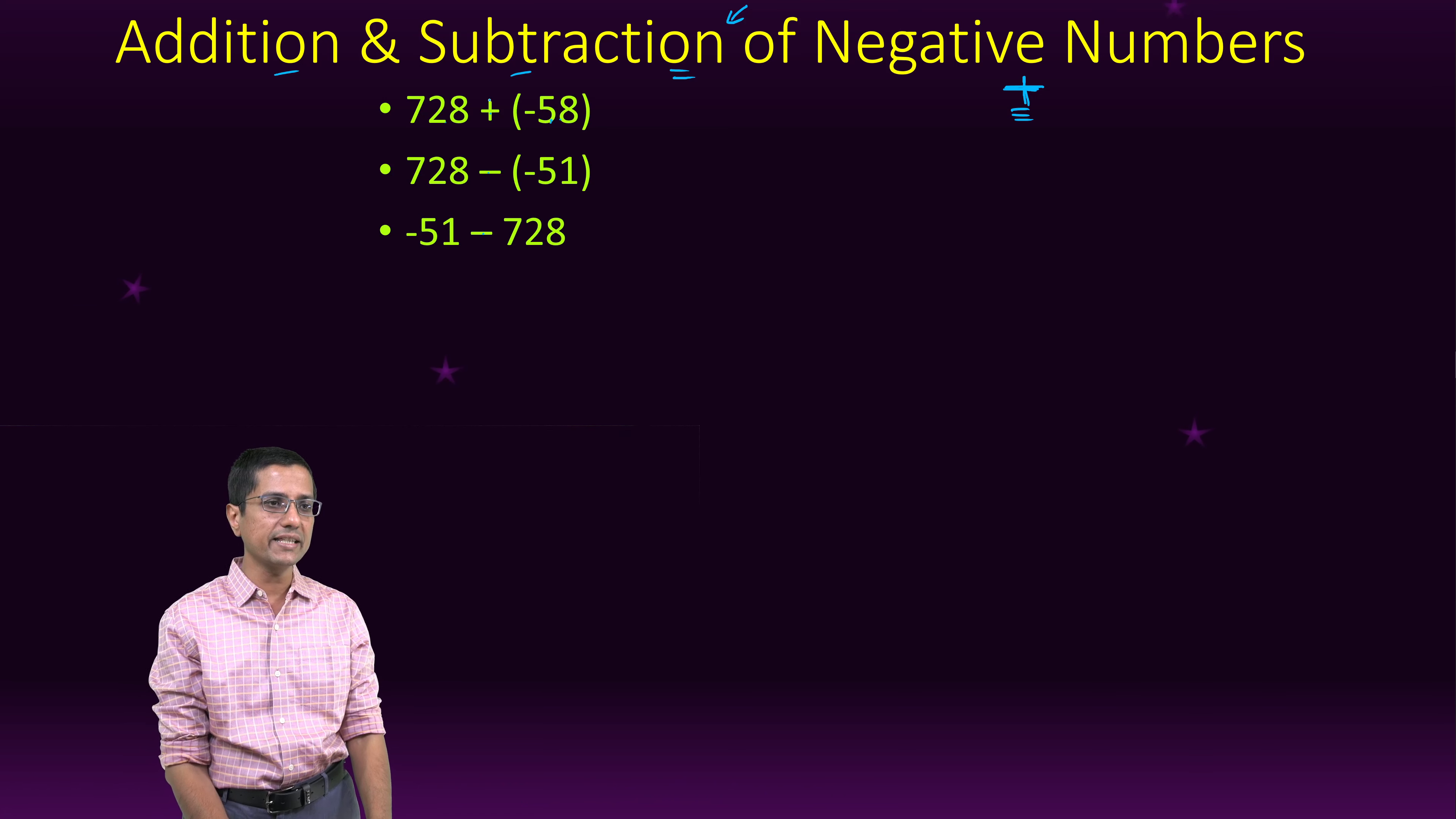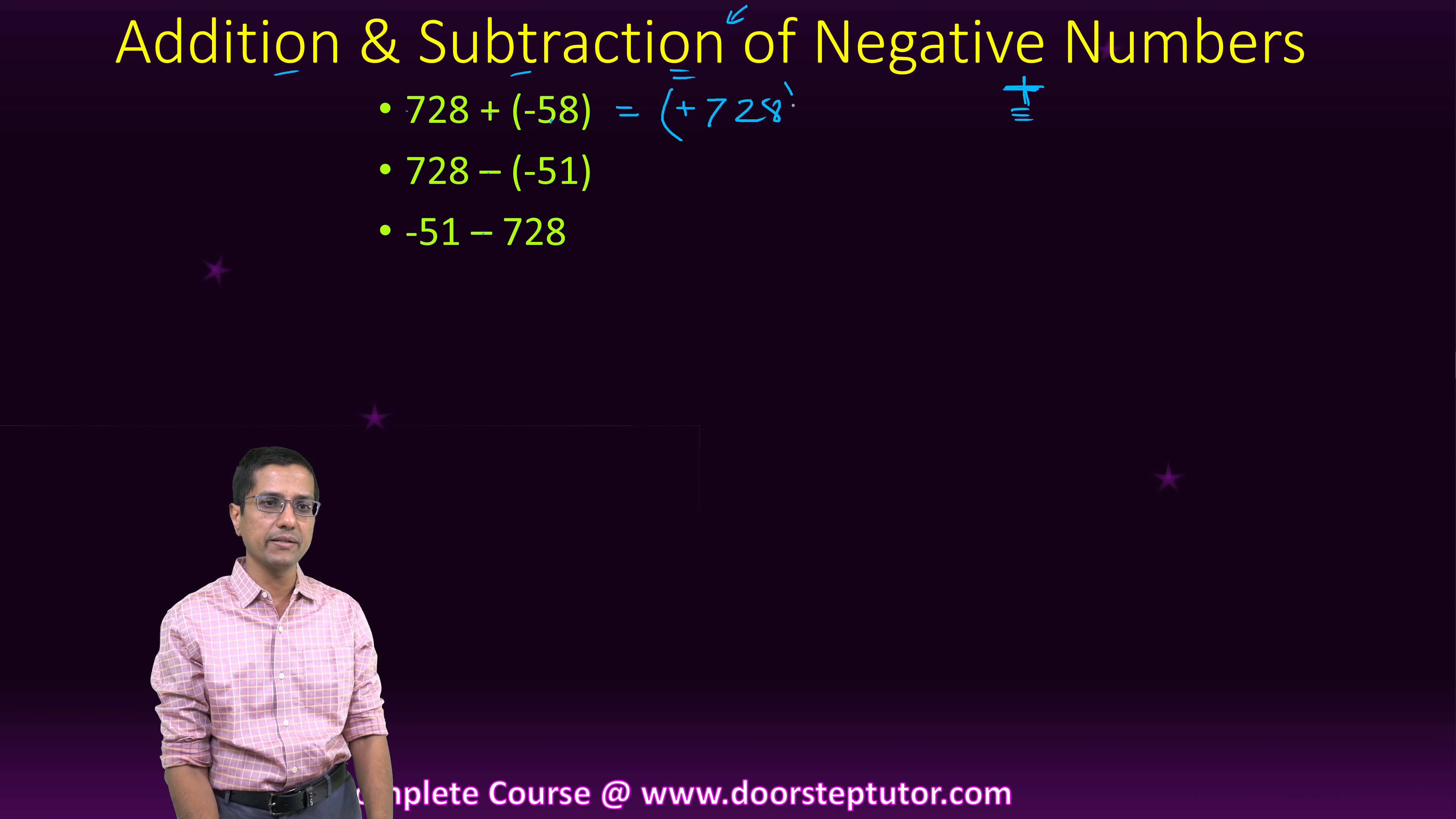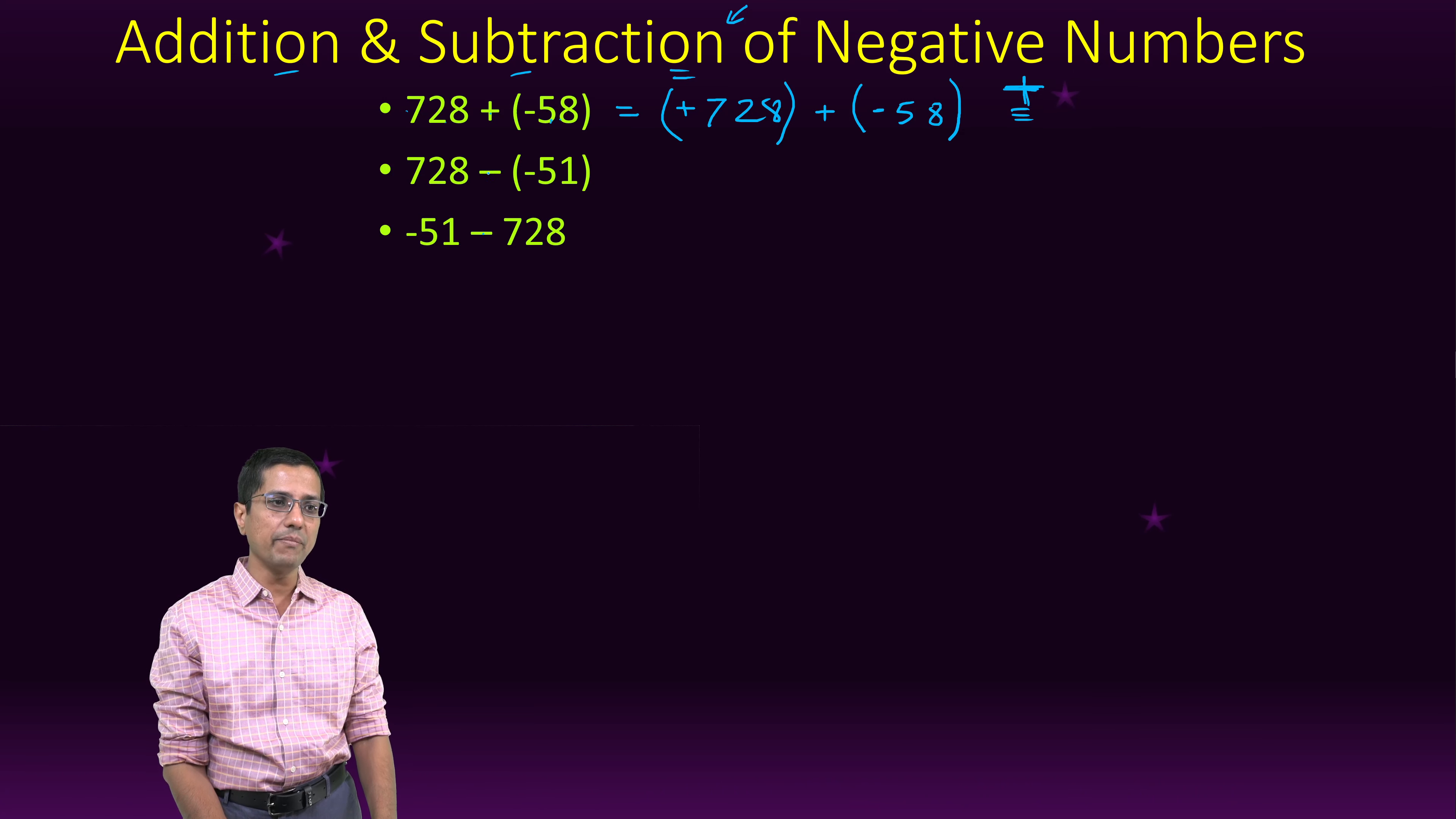The way we do it is that this is simply addition. So this is an addition of a positive number 728. When no sign is mentioned, the number is positive plus minus 58. This is a minus.